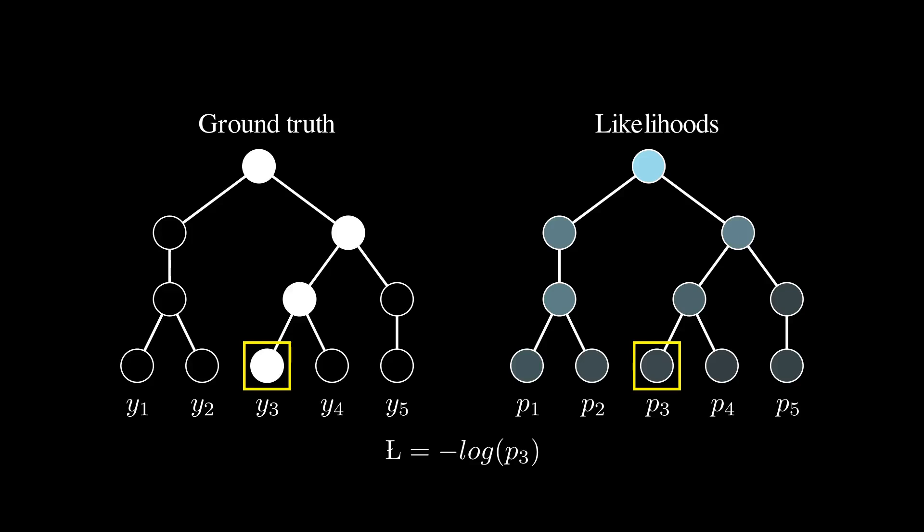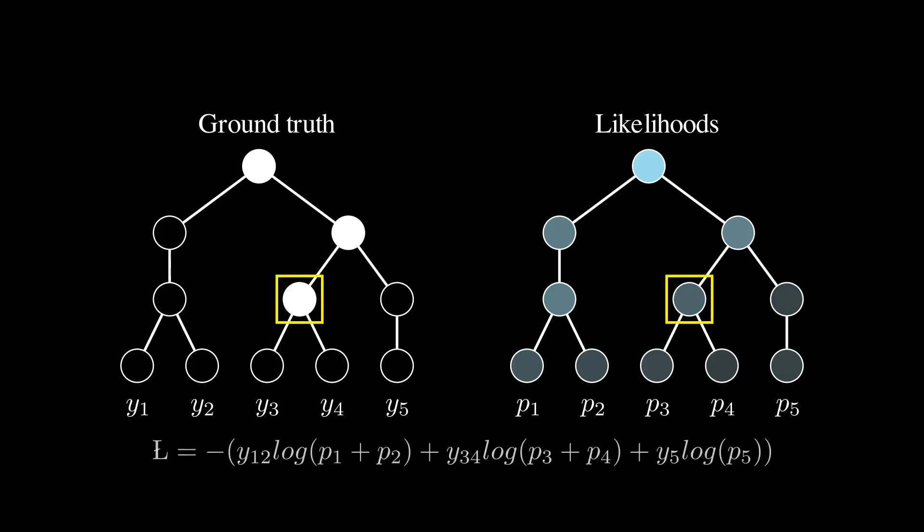If the label is only given at the level above, we simply ignore the level below it and compute the cross-entropy for the nodes of this level, using the fact that they still conveniently sum to one. This process continues, allowing it to handle labels at any level.